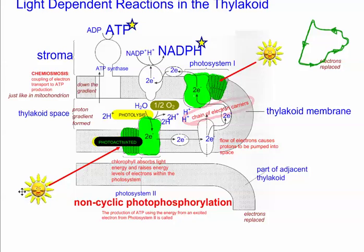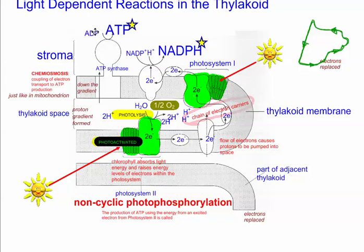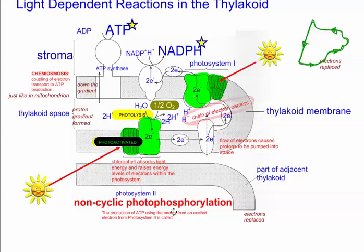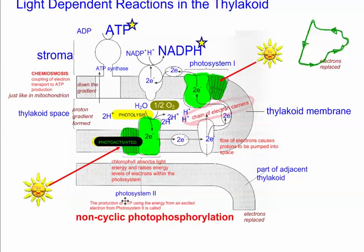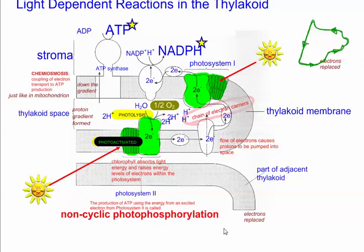Photo means in the presence of light. Phosphorylation refers to adding a phosphate to ADP — adenosine diphosphate — to make ATP, adenosine triphosphate. So it's about the production of ATP. The production of ATP using the energy from an excited electron from Photosystem 2 is called non-cyclic photophosphorylation.